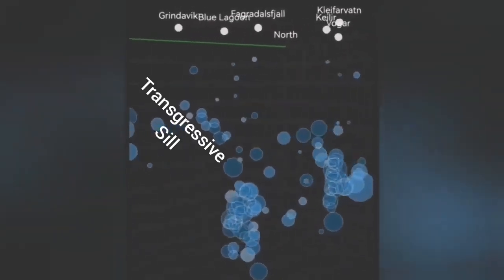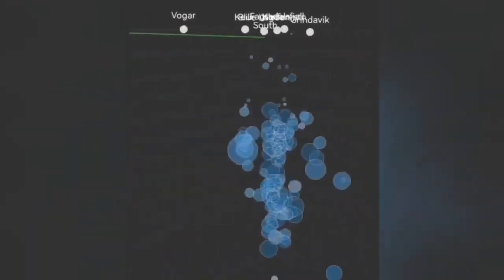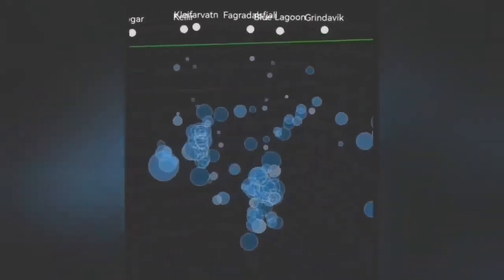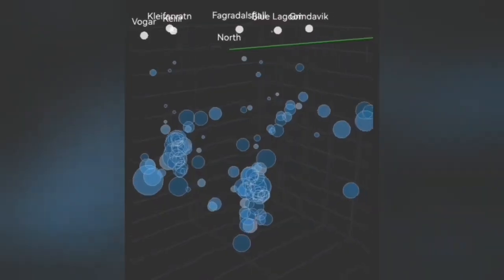We call it a transgressive sill in geological terms - a sill which has an angle and rises gradually but not vertically.